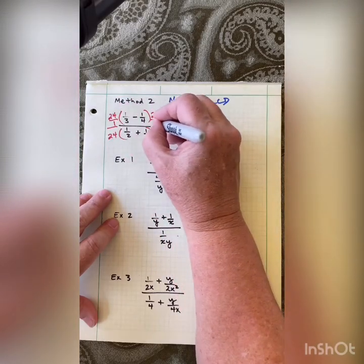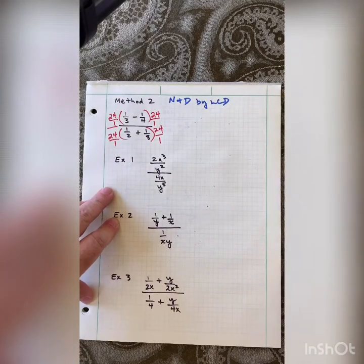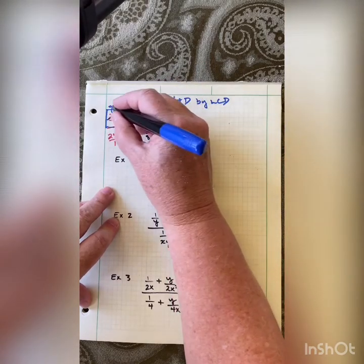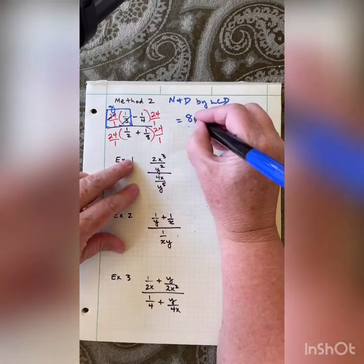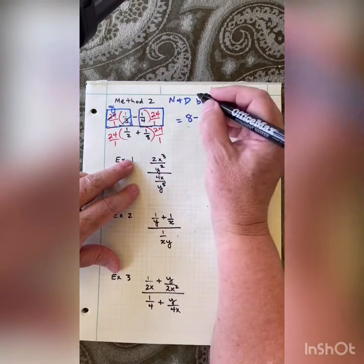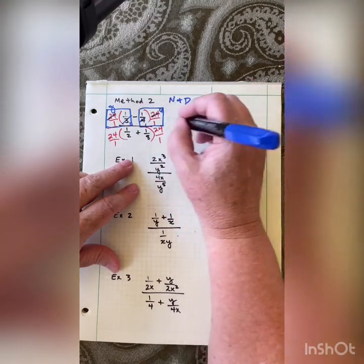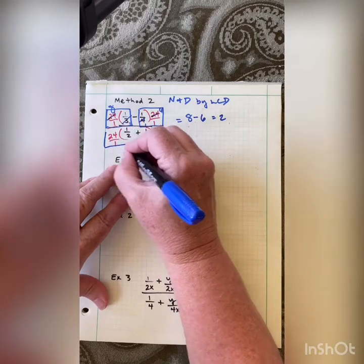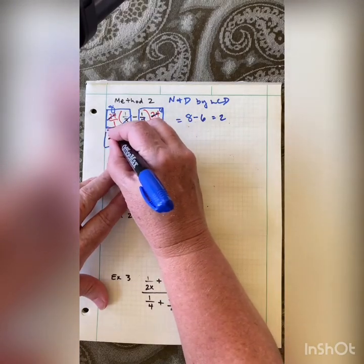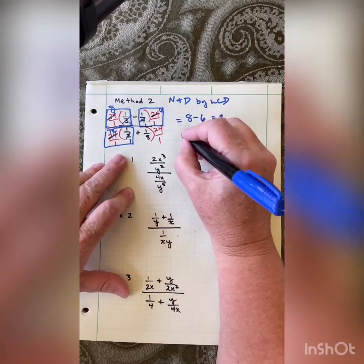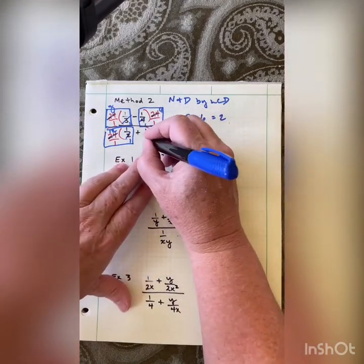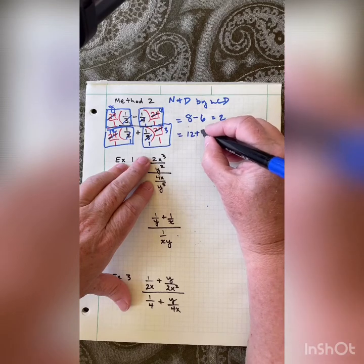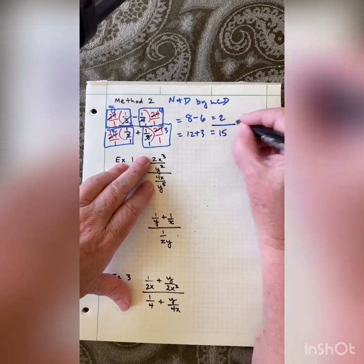Looking at this numerical example with denominators 3, 4, 2, and 8 — the LCD is 24. For the first box: three goes in once, goes into 24 eight times, so I get 8. Minus sign. For the next box: four goes in once, goes into 24 six times, giving 6. Eight minus six is two. Down here: two goes in once, goes into 24 twelve times, giving 12. Plus sign. Eight goes in once, goes into 24 three times, giving 3. Twelve plus three is 15. So the answer is two-fifteenths.